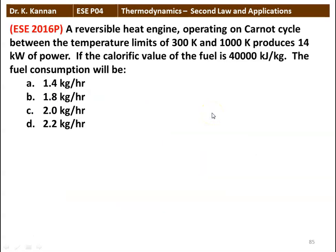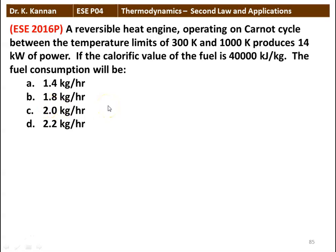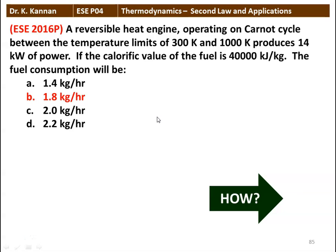Next question: a reversible heat engine operating on a Carnot cycle between temperature limits of 300 Kelvin and 1000 Kelvin produces 14 kilowatt of power. If the calorific value of the fuel is 40,000 kilojoules per kilogram, the fuel consumption will be: 1.4 kg/hr, 1.8 kg/hr, 2.0 kg/hr, or 2.2 kg/hr. The answer is 1.8 kilograms per hour. We will see how in the next slide.